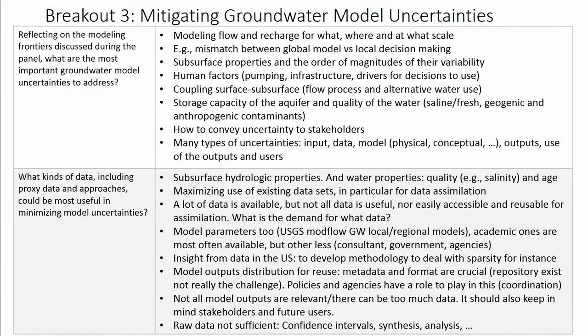The second question was: what kinds of data, including proxy data and approaches, could be most useful in minimizing model uncertainties? We discussed subsurface hydrologic properties as well as water properties — taking into account the quality and age of the water to understand recharge and lateral flow. We wanted to maximize the use of existing data sets for data assimilation, as there are many data products not fully exploited. However, not all data is useful or easily accessible and reusable for assimilation.